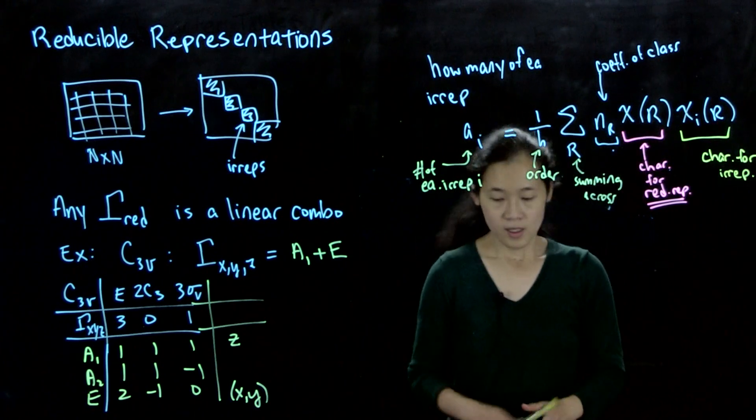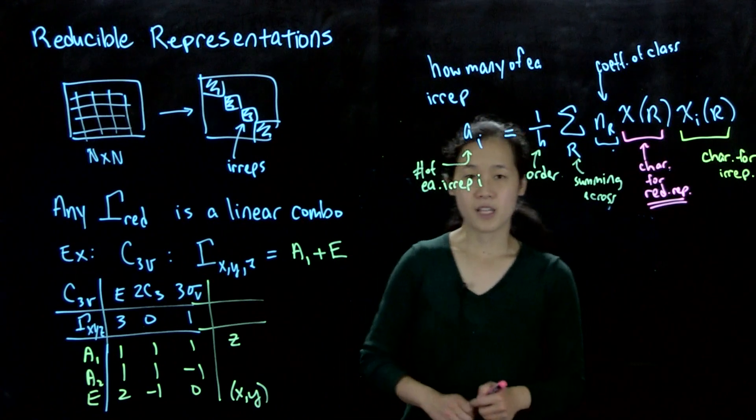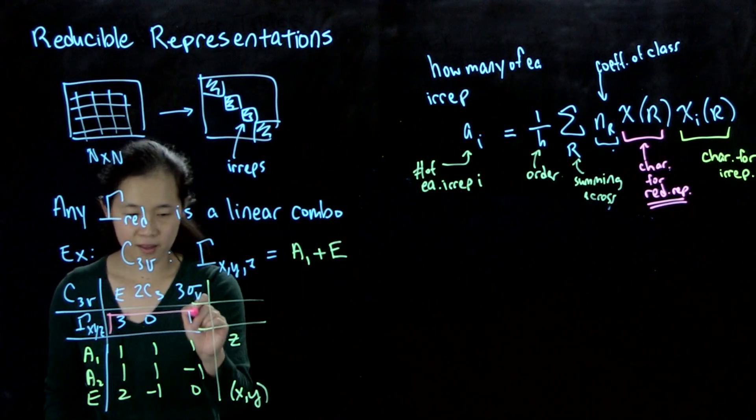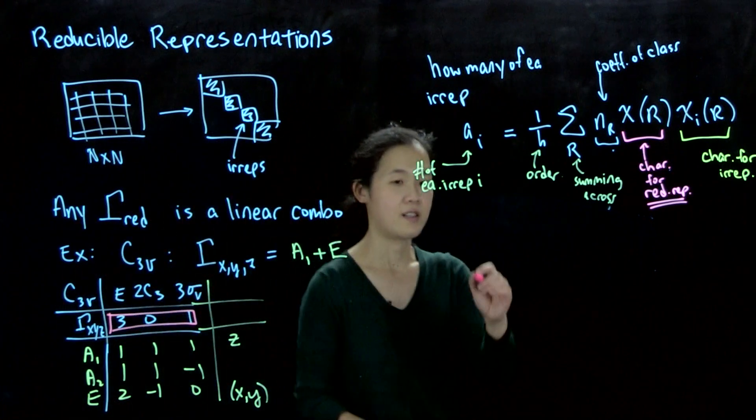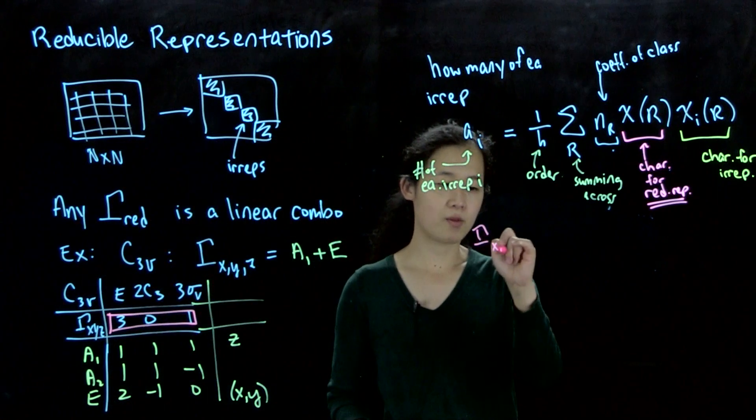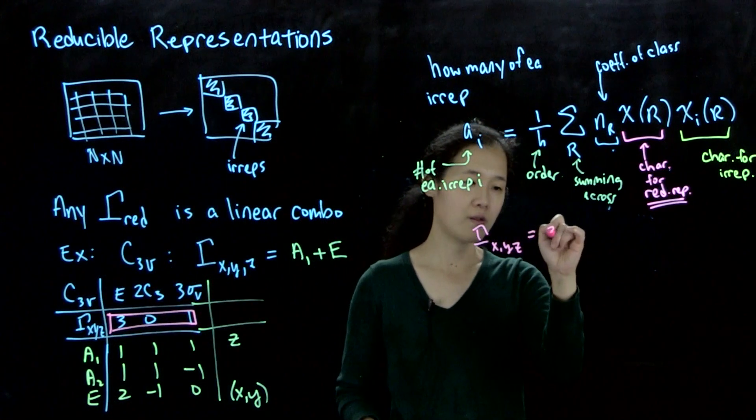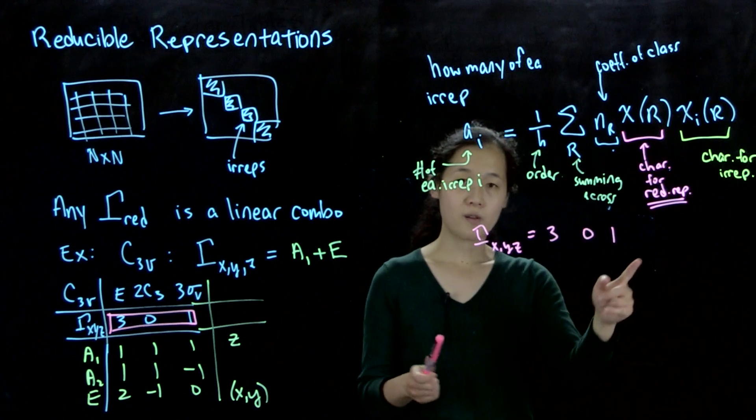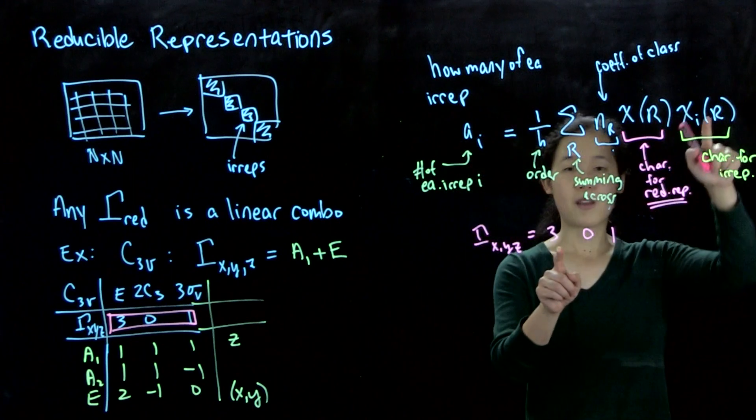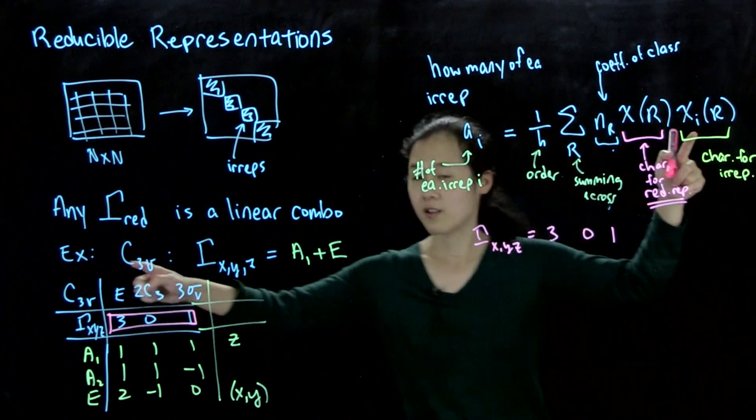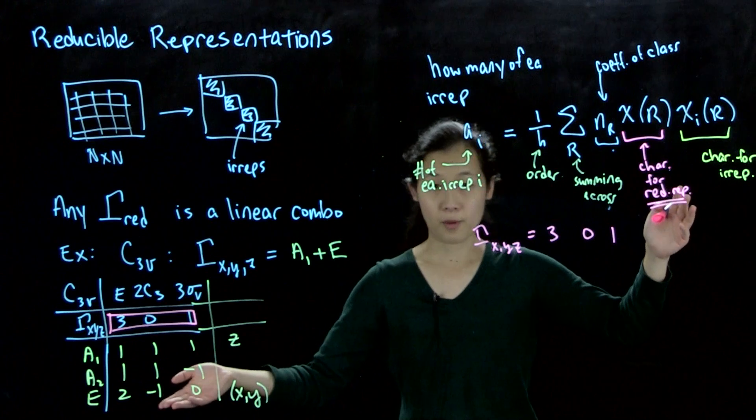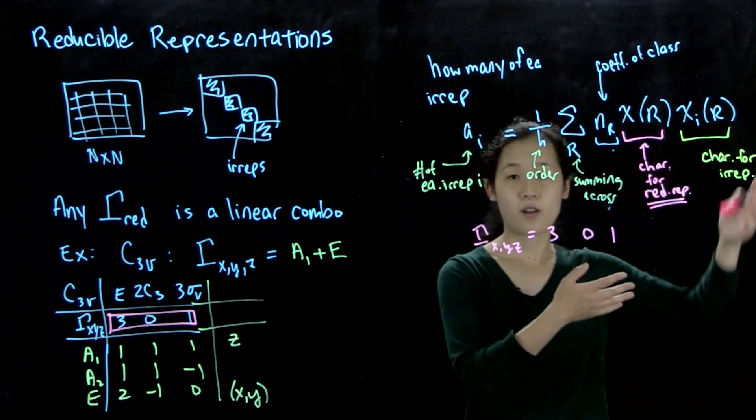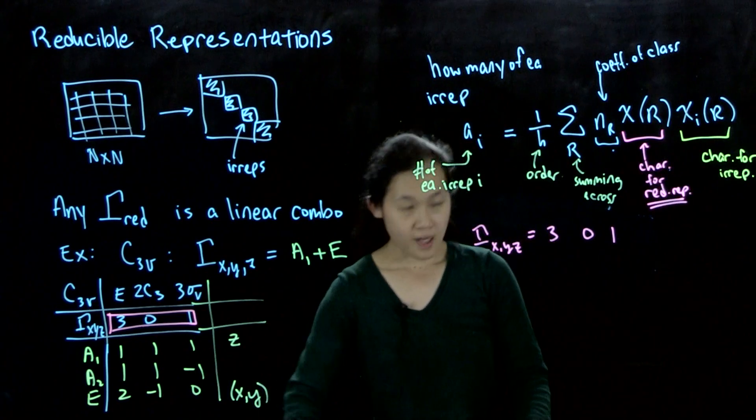Let's consider our gamma x, y, z, which again is 3, 0, 1, as our example. So let me rewrite that here. Gamma x, y, z equals 3, 0, 1. What we're going to do is go across the row and then multiply the 3 by the character under this E column for the irreducible representation that we're looking at, and then add across. So let's try this example.